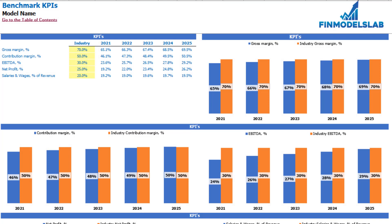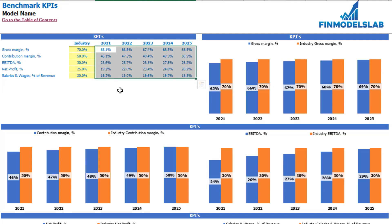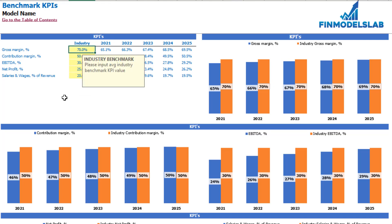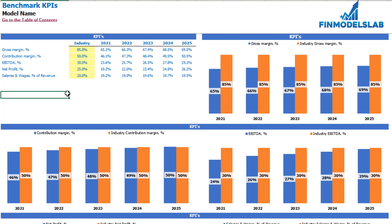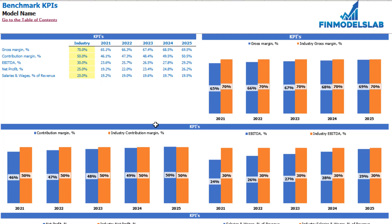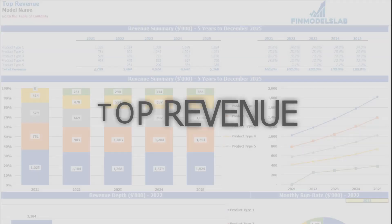On the benchmarks KPI tab you may compare your financial outputs with industry benchmarks. There are five benchmarks: gross margin, contribution margin, net profit, EBITDA, and salaries and wages as a percentage of revenue. In the white cells you see model-produced values, and in the yellow cells you can set up your industry benchmarks — for example, gross margin of 85% for your industry. Below you see the same information graphically: orange columns for industry benchmarks and blue columns for model values.